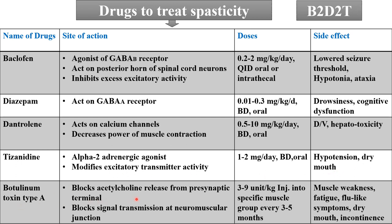Botulinum toxin type A blocks acetylcholine release from the presynaptic terminal, blocking signal transmission at the neuromuscular junction. It is given as an injection of 3 to 9 units/kg into the specific muscle group. Its effect persists for up to 5 months, so it must be repeated every 3 to 5 months if needed. Side effects include muscle weakness, fatigue, flu-like symptoms, dry mouth, and incontinence. These are the drugs for spasticity in spastic CP.